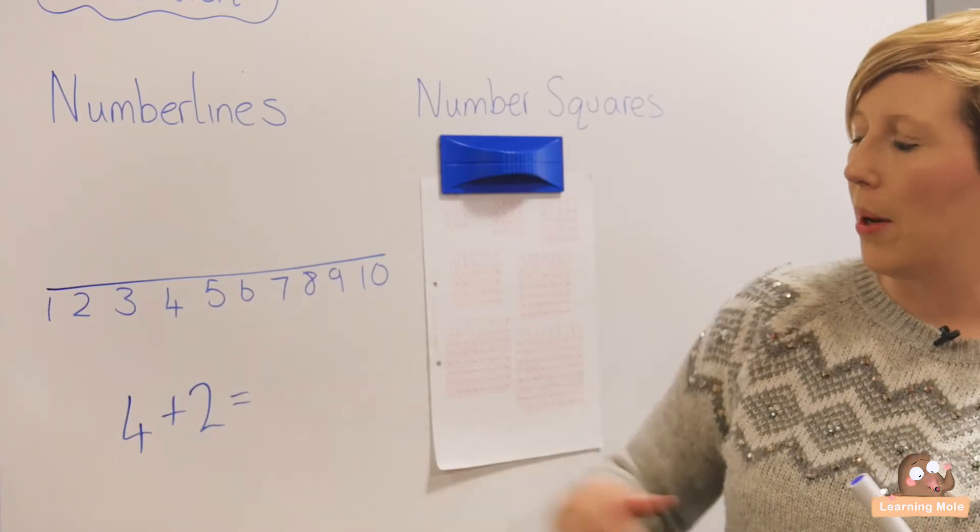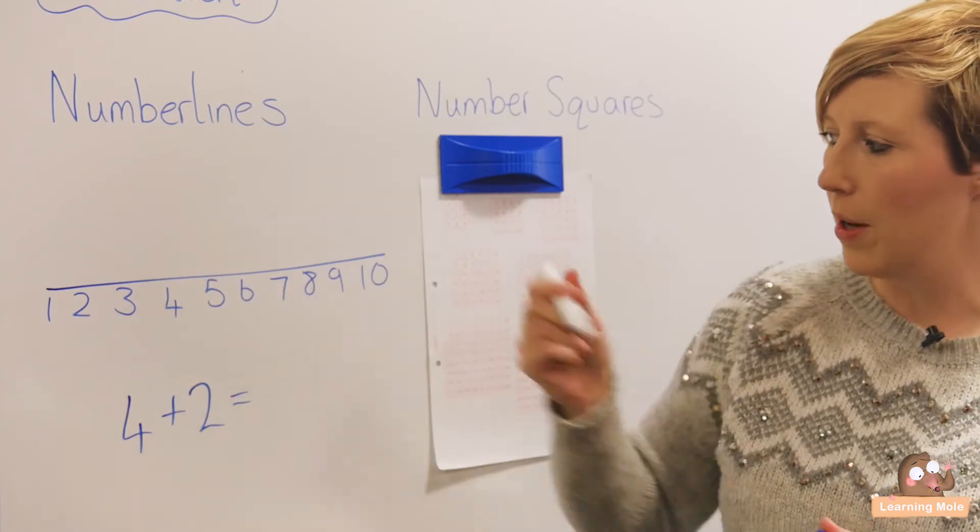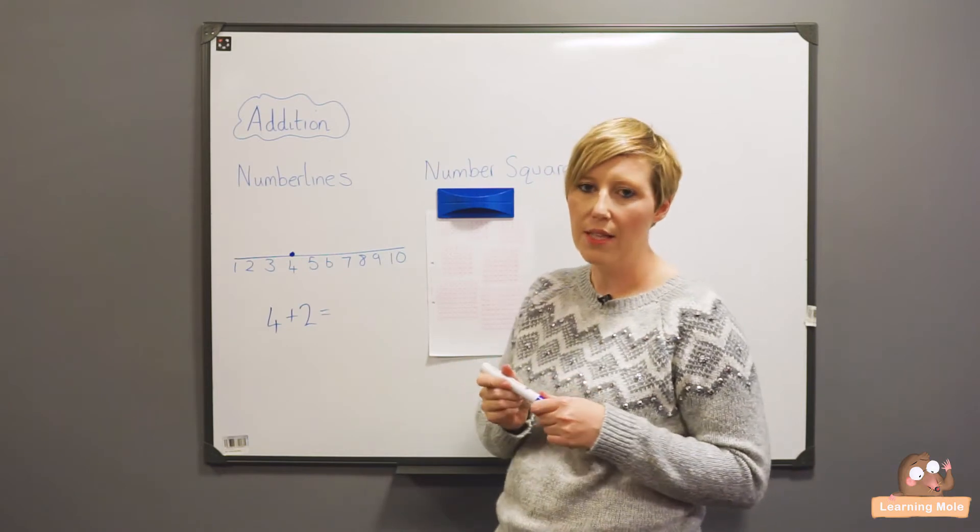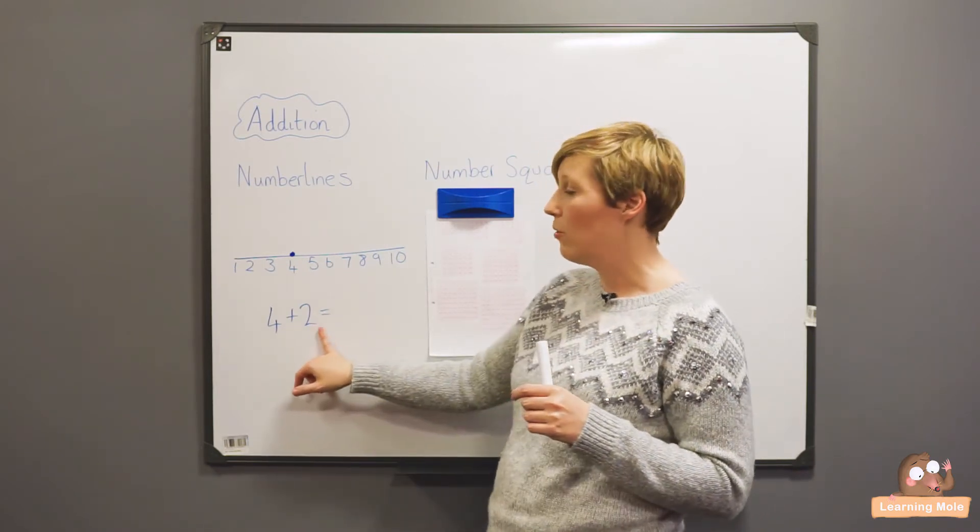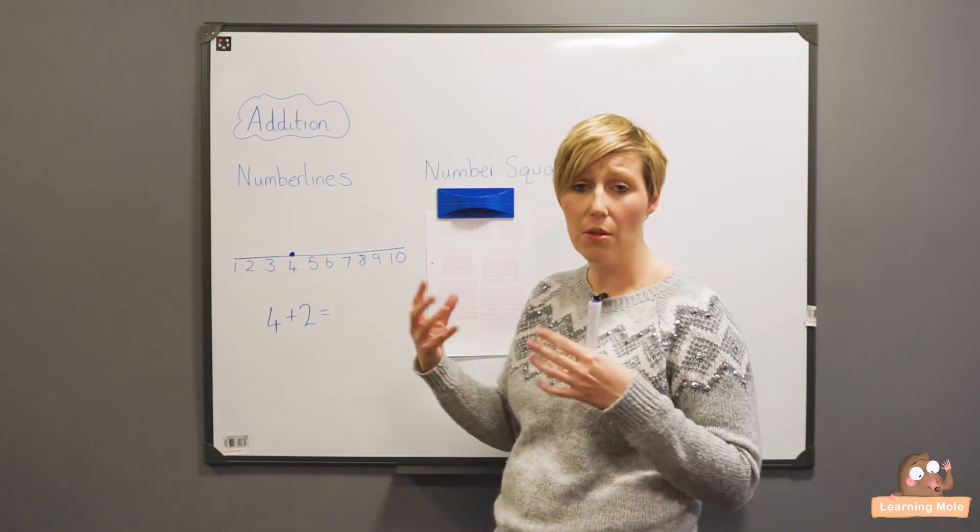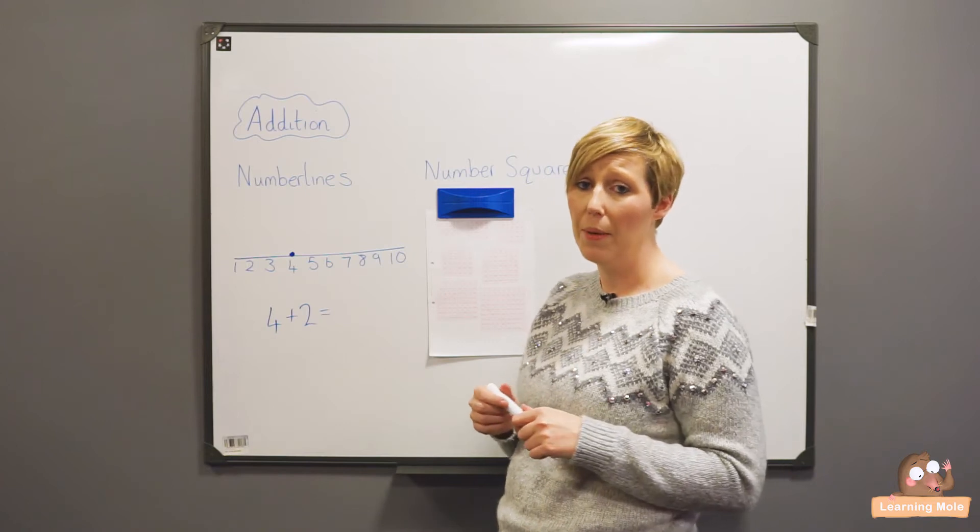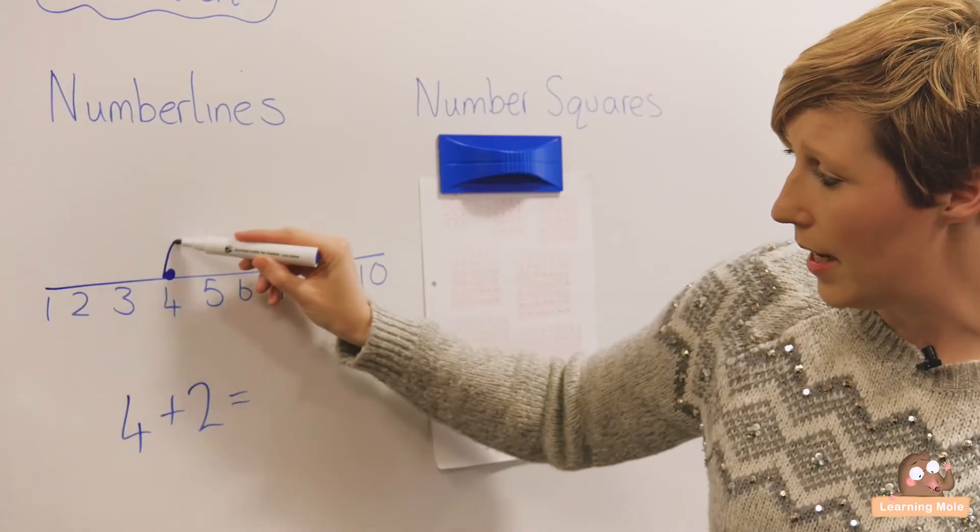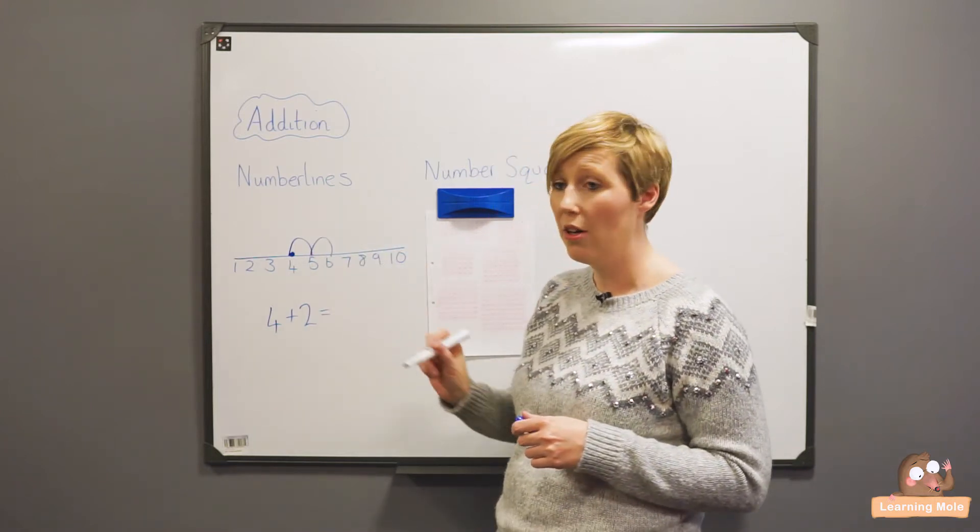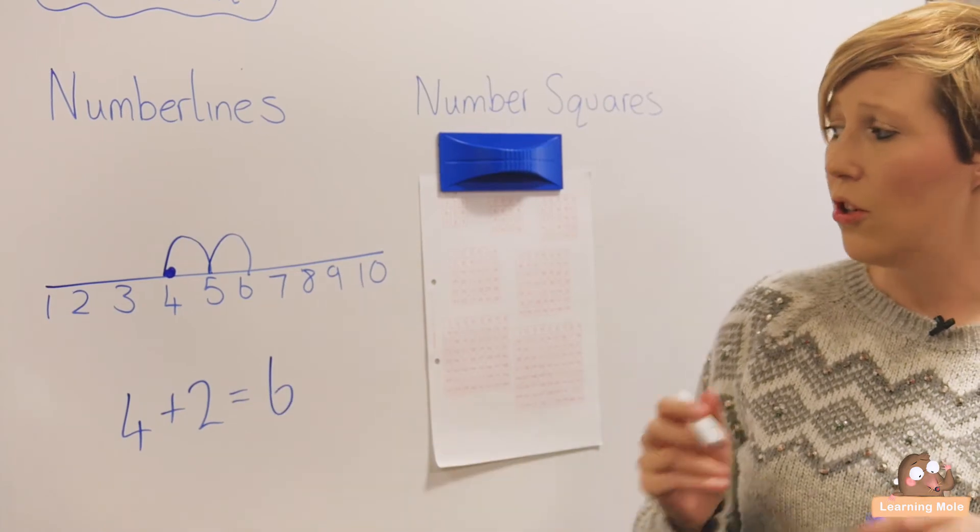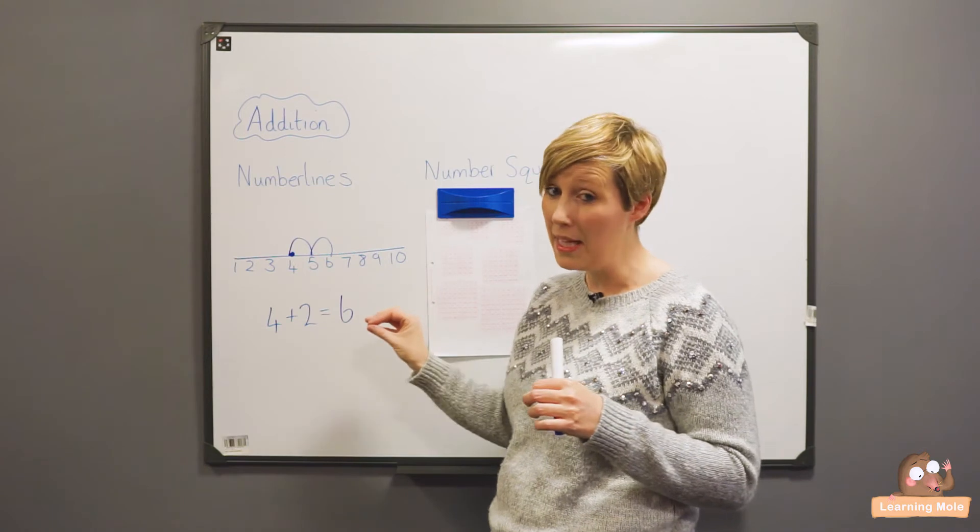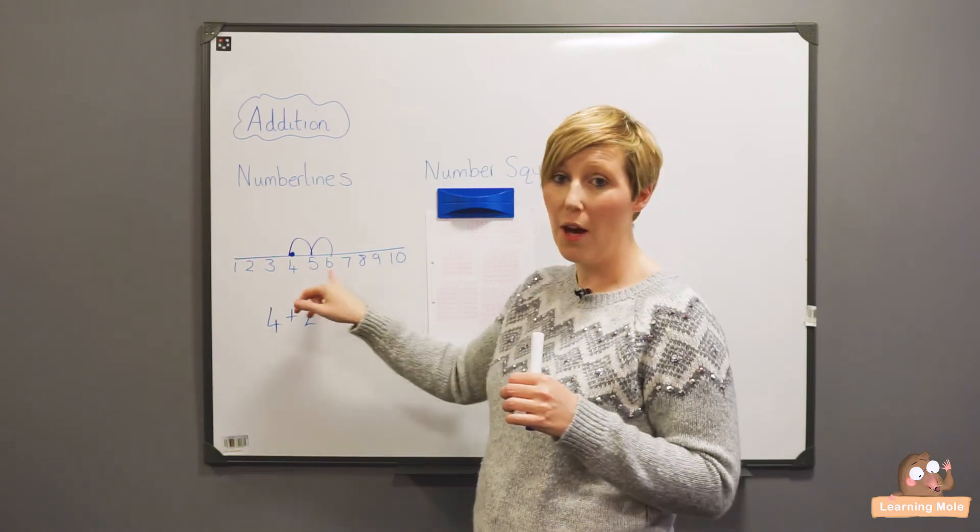For 4 plus 2, we go to number 4 and I always encourage children to draw a dot where they're starting, so they know that's their starting point. Then we're adding on 2. We discuss the idea that adding 2 is 2 jumps—it could be 2 sweets, 2 anything, but we'll talk about 2 jumps. So we do 1 jump to 5, then 1 jump to 6. We've done our 2 and our answer is 6. Your child can very visually see what adding 2 means, and they've got a means of double-checking.